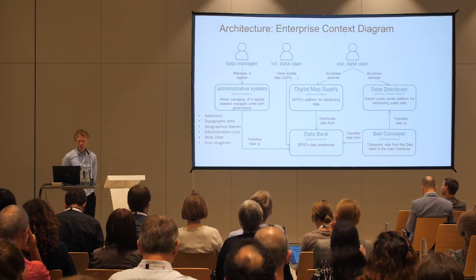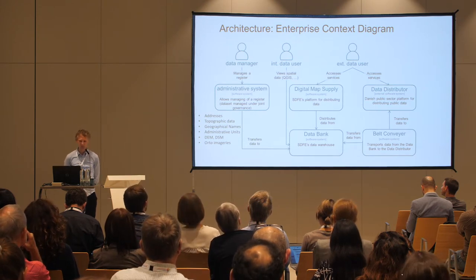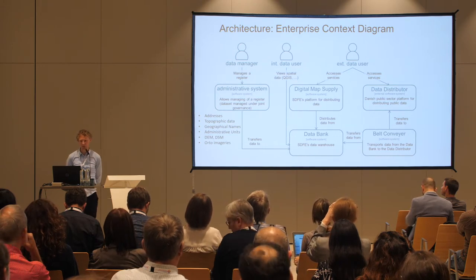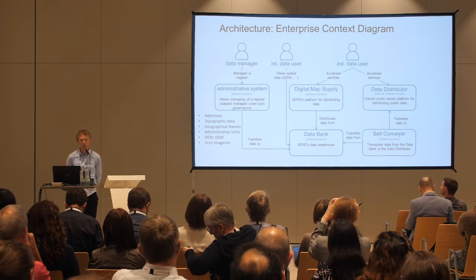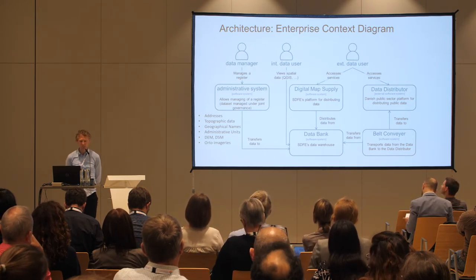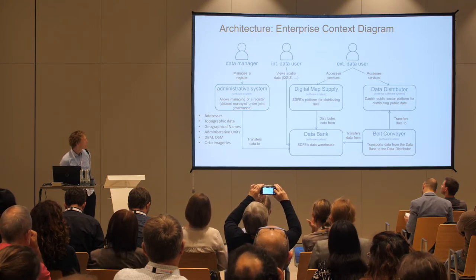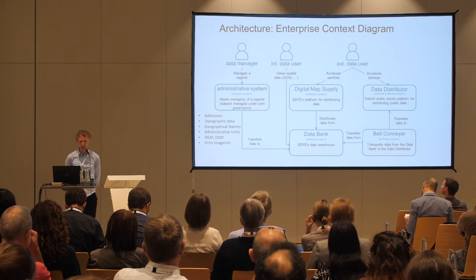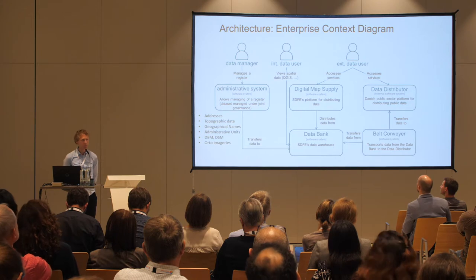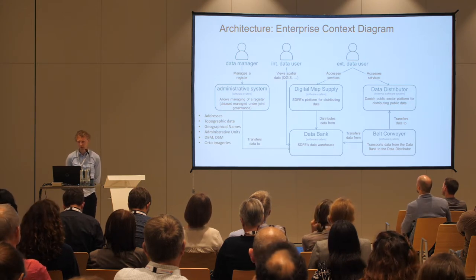This picture shows the architecture in the agency and the data flow. We have several data managers who work with administrative or production systems where they maintain their data. As we are a mapping agency, the data we maintain includes addresses, topographic data, and so on. When maintained, data is sent into our central data warehouse called the Data Bank, where it is stored and made ready for distribution.